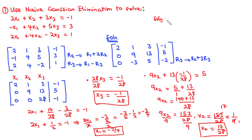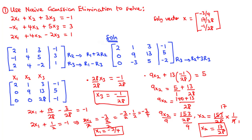Therefore the solution vector x equals the column matrix [x1, x2, x3] = [–3/4, 17/28, –1/28]. This is how to solve a system of equations using naive Gaussian elimination. This was one of the simplest examples; in the next section we will consider more complex ones.